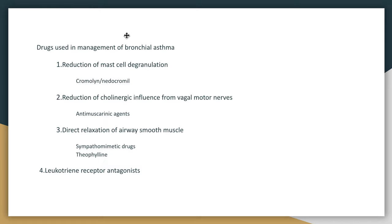So the drugs are either bronchodilators — such as antimuscarinic agents, sympathomimetics, and theophyllines — or they suppress the inflammation or the effect of inflammation, which includes reduction of mast cell degranulation, leukotriene receptor antagonists, and glucocorticoids.